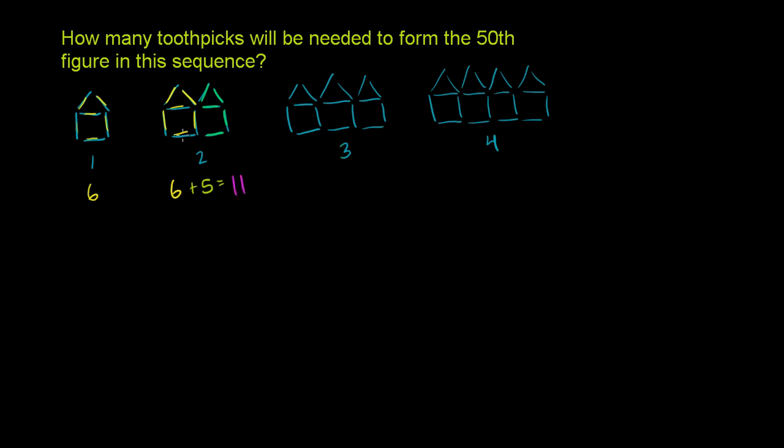And then when we go to the third figure, it looks just like the second figure. So it has the 11 toothpicks. So it looks like every time when you draw a part of another house, because it can kind of share a wall with the previous house, you add five toothpicks. So for the third term in our sequence, we had 11 when we had our second term, and then we add five more. So 11 plus 5 is going to be 16. And then for the fourth term, it's going to be 16 plus 5, which is equal to 21.